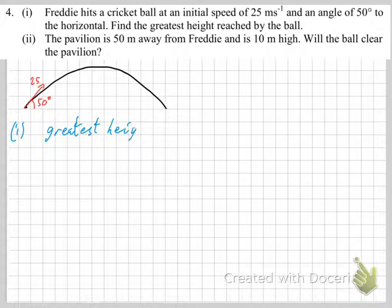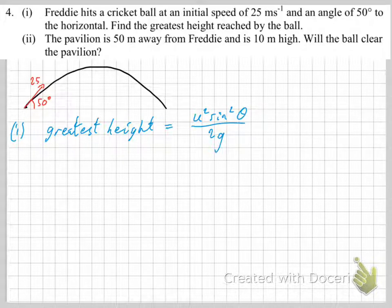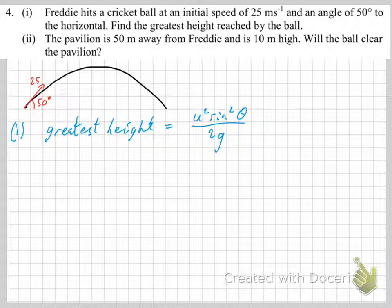Greatest height. Now, there is a formula for this, and it's in the green book. It gives it as u squared sine squared theta over 2g.